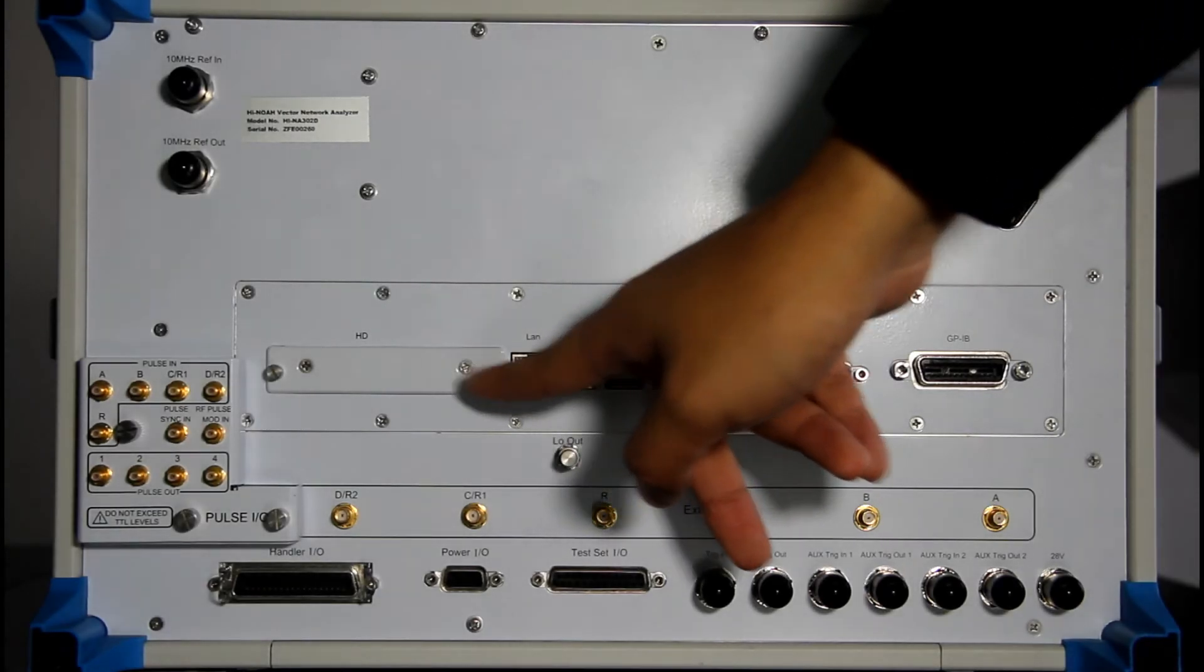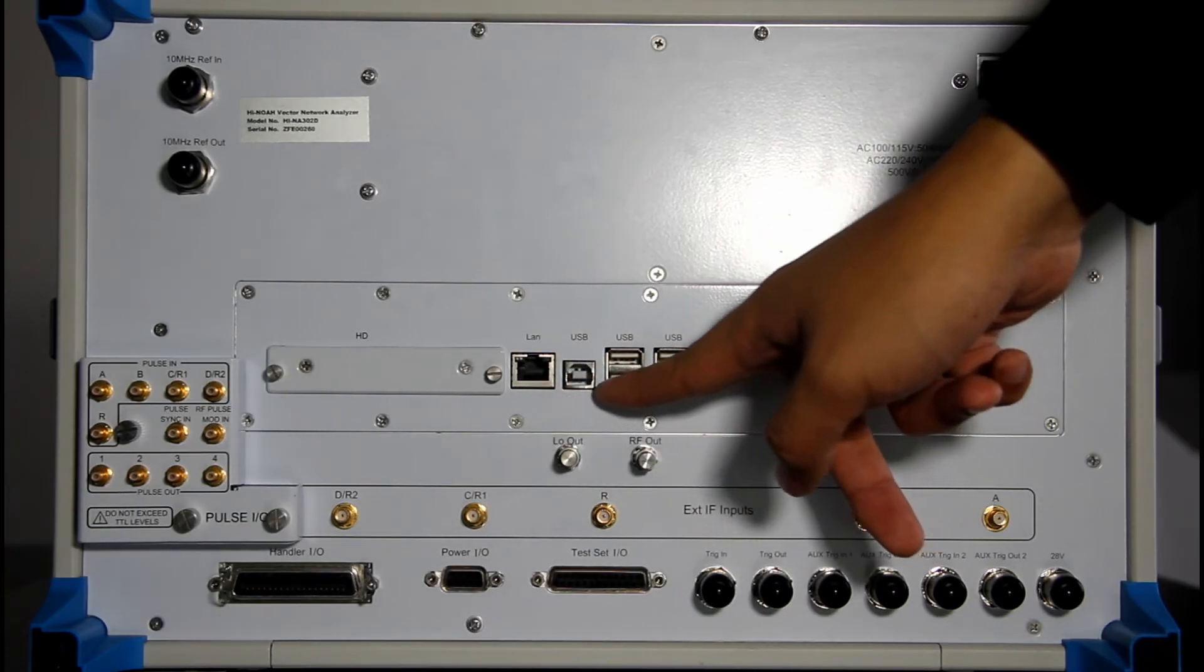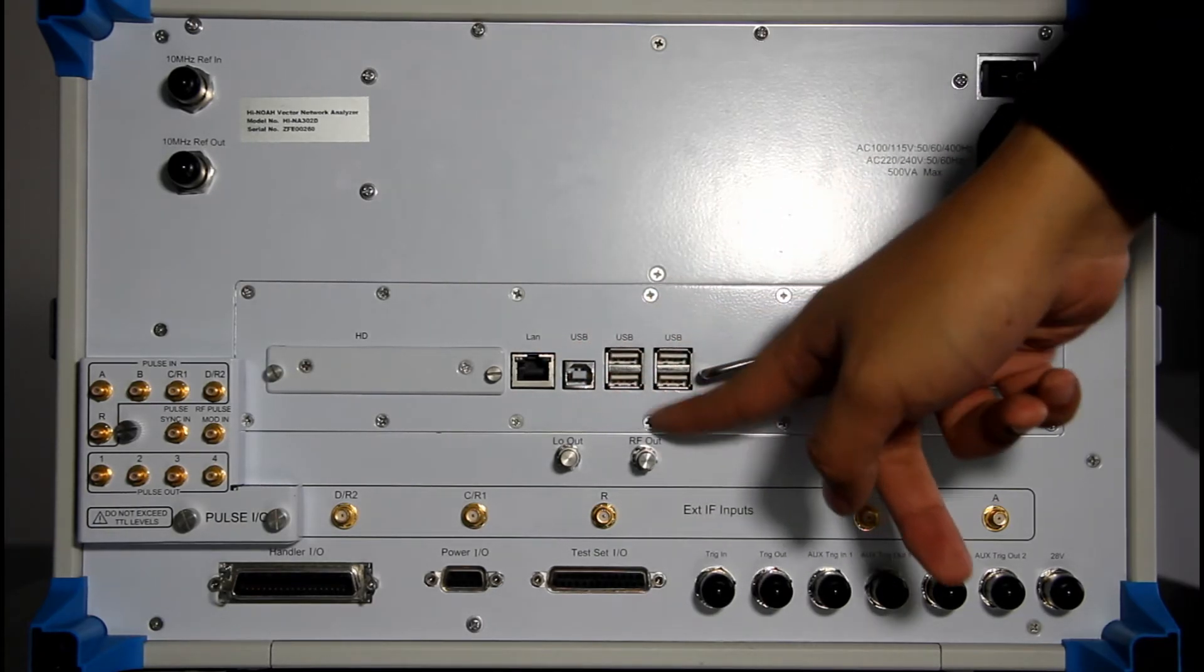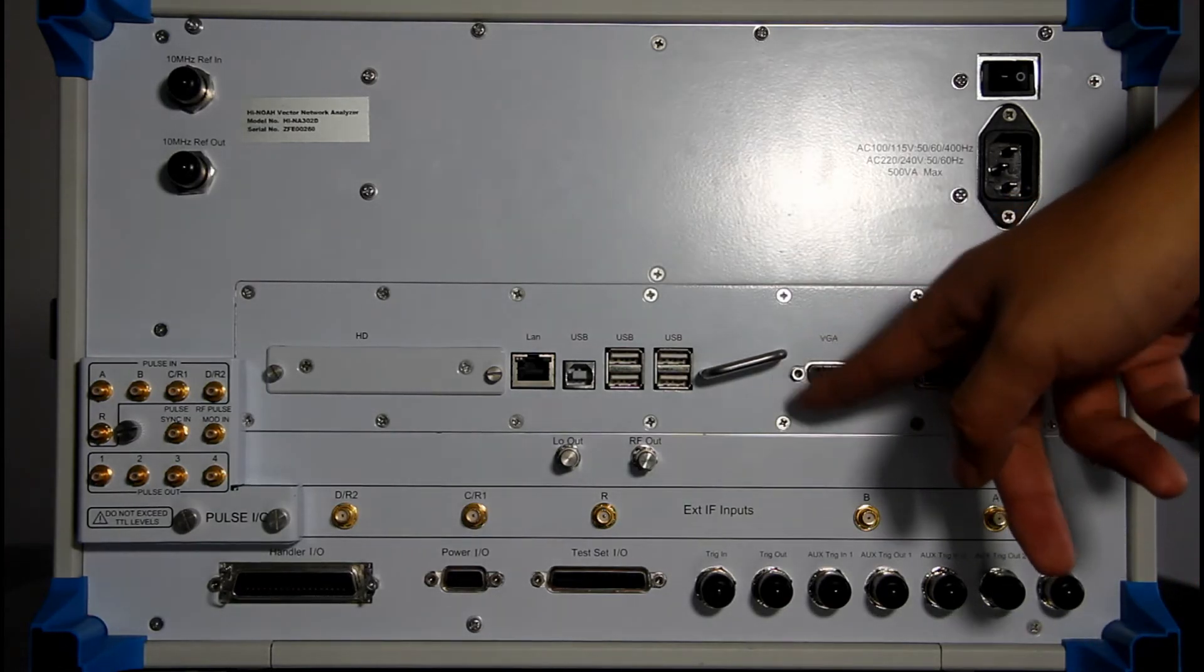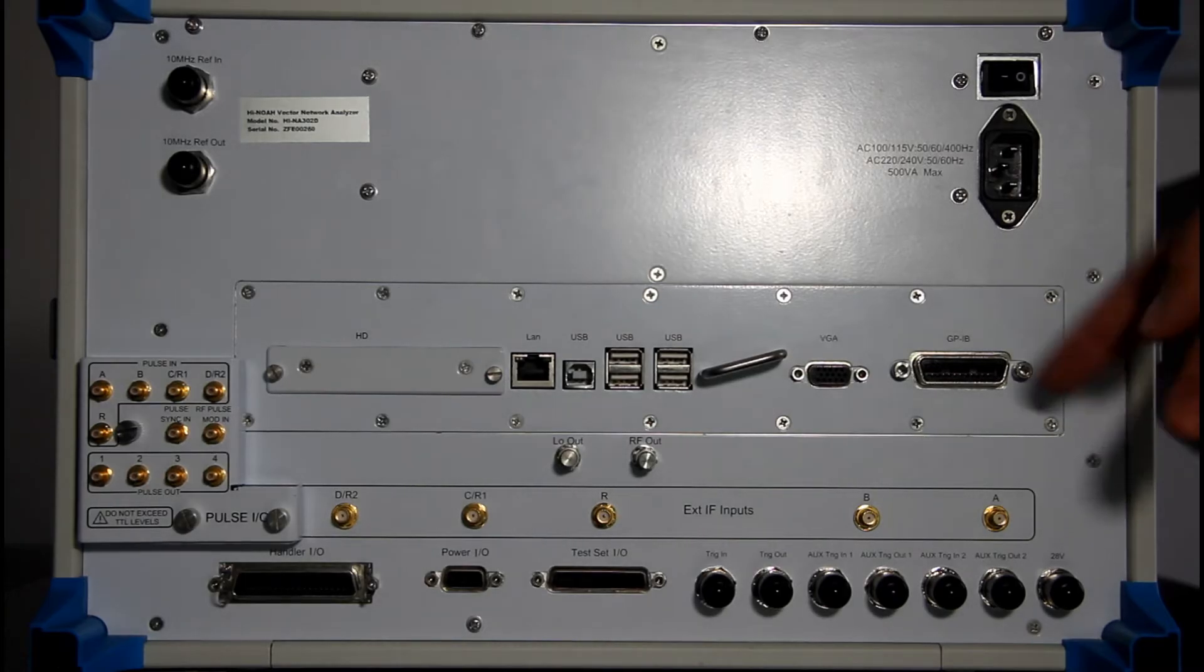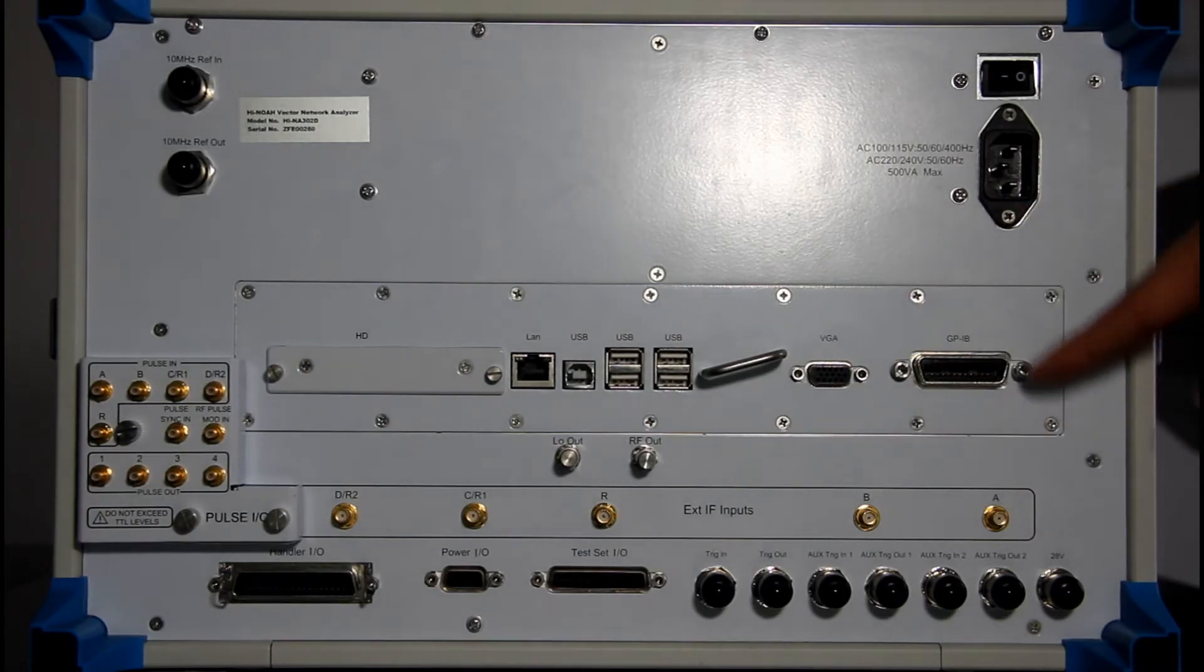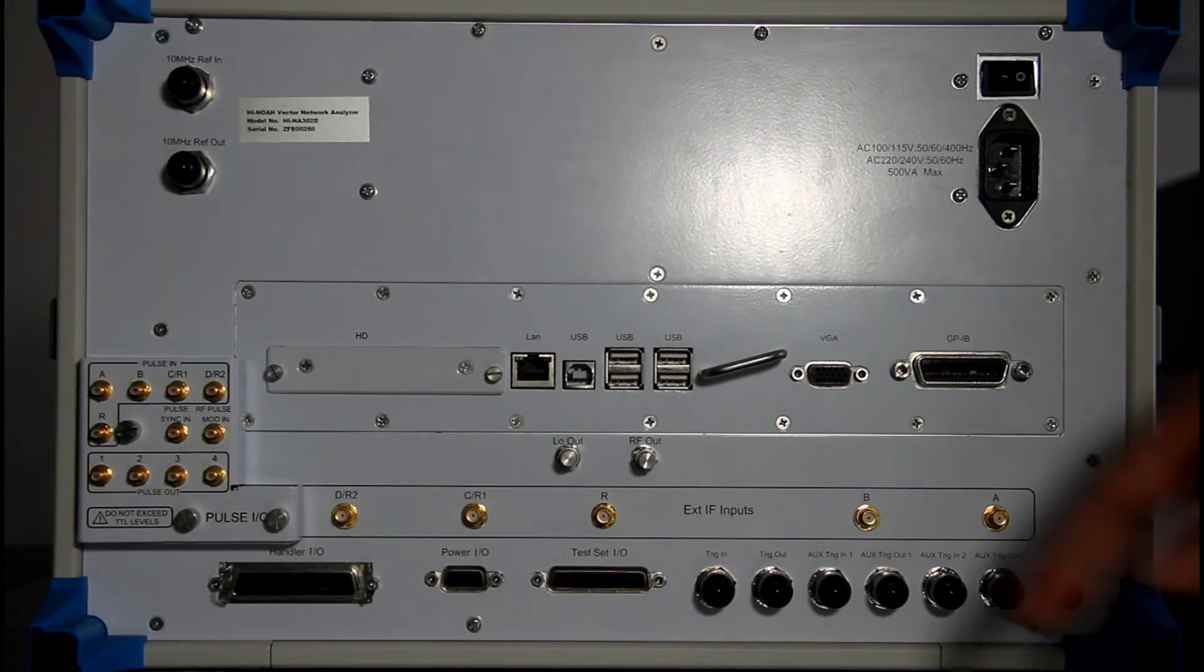And let's go down. This is the hard disk. This is the LAN interface for remote control or data transmission. This is a USB. There are four USB interfaces. This is a VGA. You can connect to a display screen. Use this interface. GPIB also used for the remote control.